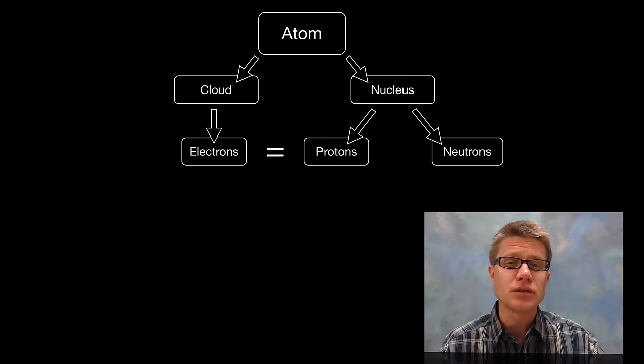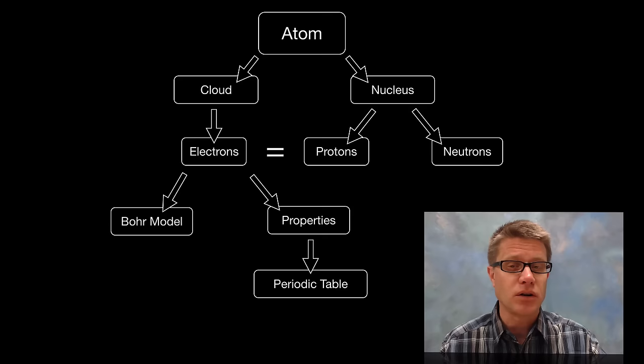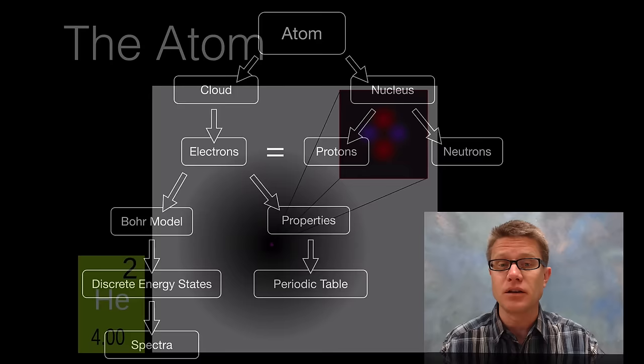And the electrons tell us a lot about the properties of that atom. In fact the whole periodic table is built on the electrons, especially the electrons we have in these outer levels. Now the Bohr model helps us explain what those electrons are doing and how they are moving. They move into these discrete energy states. And that helps us to explain the spectra.